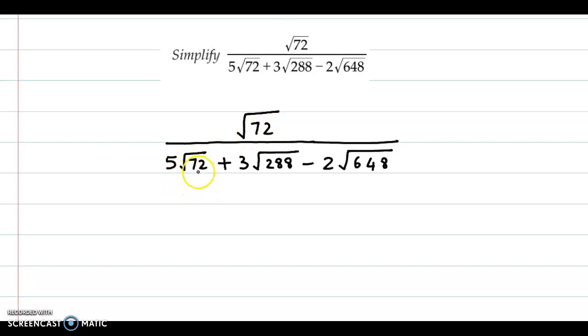Here also we have a term which has root 72. Now if you observe closely, 288 is actually 4 times 72. And 648 is actually 9 times 72.